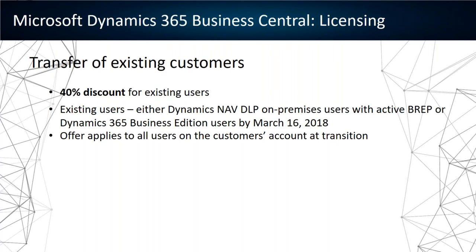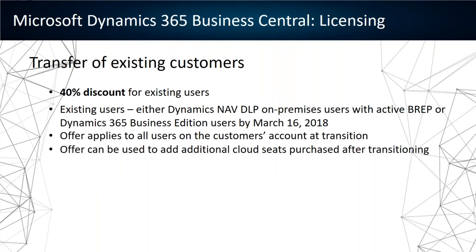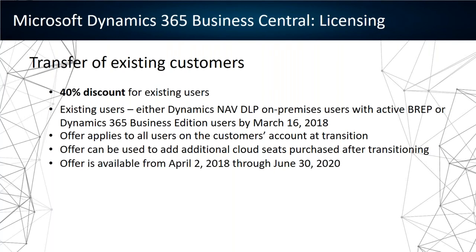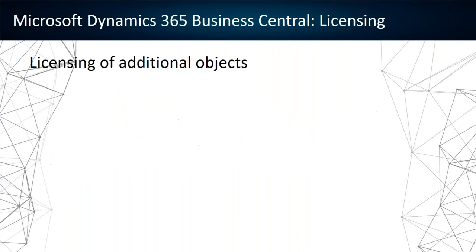The 40% discount offer applies to all users of the customer account in transition. You can actually utilize more seats — if you have five customers licensed with perpetual on-premises licenses, you can switch to Business Central and with the 40% discount get even more users licensed. The offer is available from yesterday through a couple of years ahead, so you have time to consider and talk to your customers for a smooth transition.